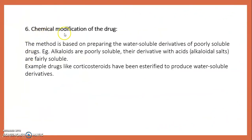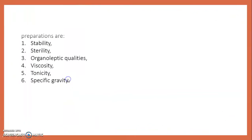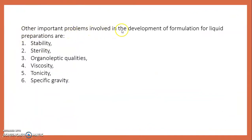Chemical modification of the drug is based upon preparing a water-soluble derivative of a poorly soluble drug. For example, alkaloids are poorly soluble, but their derivatives with acids — alkaloidal salts — are fairly soluble. Corticosteroids have been esterified to produce water-soluble derivatives. Other important problems in developing formulations for liquid preparations include stability, sterility, organoleptic qualities, viscosity, tonicity, and specific gravity.